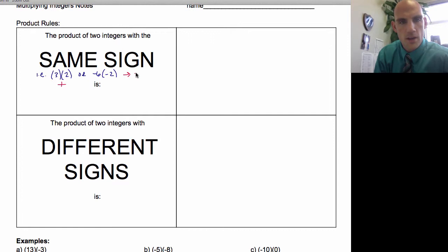So it would be the opposite of six times negative two, which is negative 12. So the opposite of that. So negative, negative 12 equals a positive answer. That's a little bit confusing, but that's the explanation.